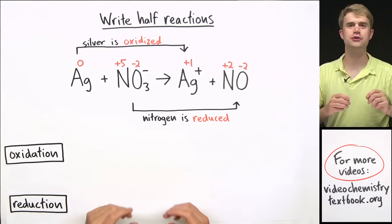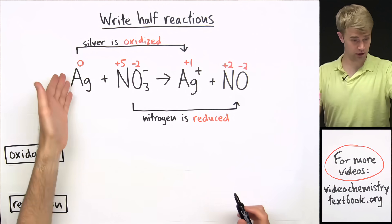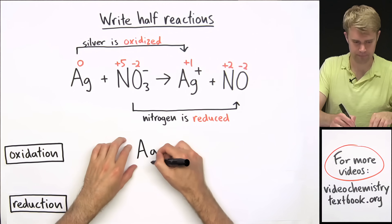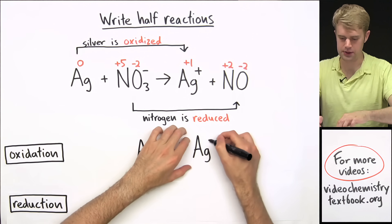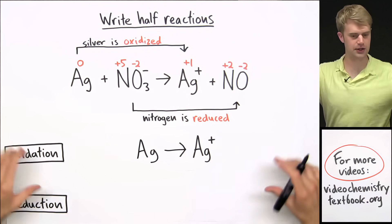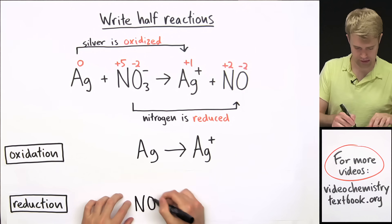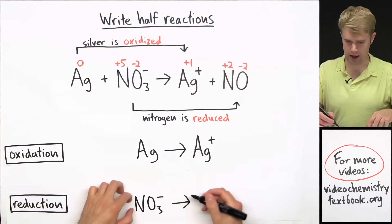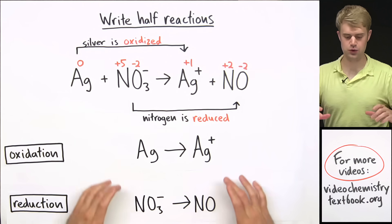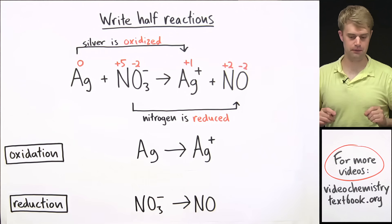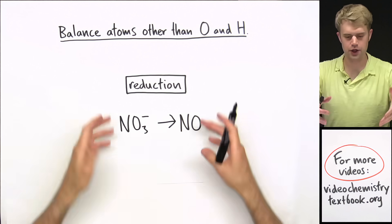Now we're going to write half reactions for the oxidation and reduction separately. For the oxidation half reaction, we have Ag on one side and Ag⁺ on the other. For the reduction half reaction, we have NO3⁻ on one side and NO on the other. The next thing we're going to do is balance each one of these equations separately — starting with the reduction half reaction, then the oxidation half reaction.